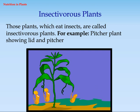Insectivorous plants. Those plants which eat insects are called insectivorous plants. For example, pitcher plants — showing lid and pitcher.